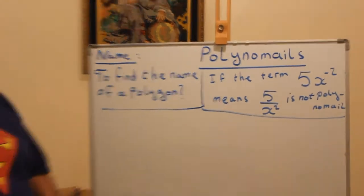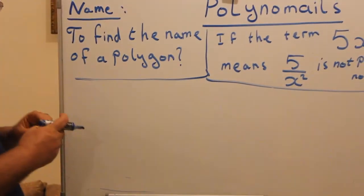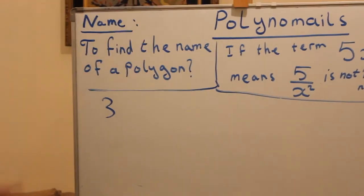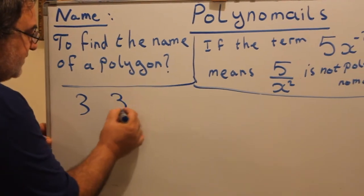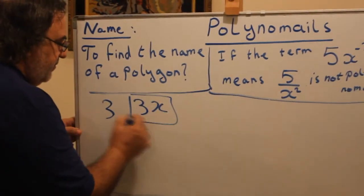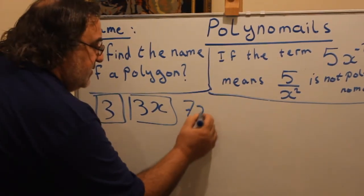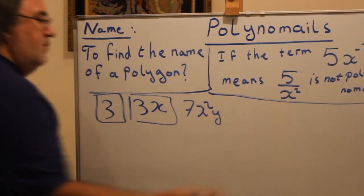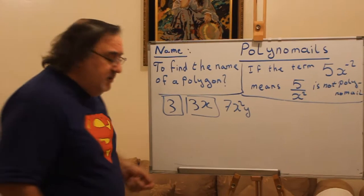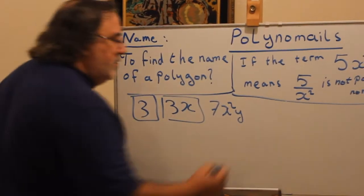Now, if we have one term — the expression can be 3, that is one term. Sometimes it can be 3x, that is another term. Sometimes it can be 7x squared — this is also one term. So if an expression has one term, we say...